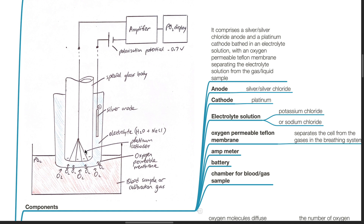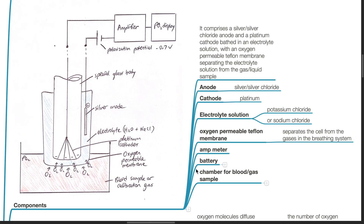The anode is made of silver or silver chloride. The cathode is made of platinum. The electrolyte solution is potassium chloride or sodium chloride. An oxygen-permeable Teflon membrane separates the cell from the gases in the breathing system. Additional components include an ammeter, a battery, and a chamber for blood or gas sample.